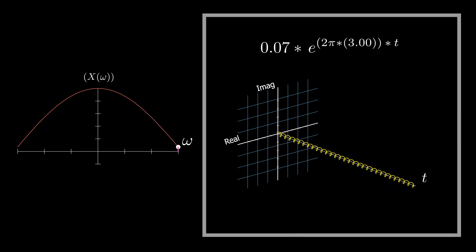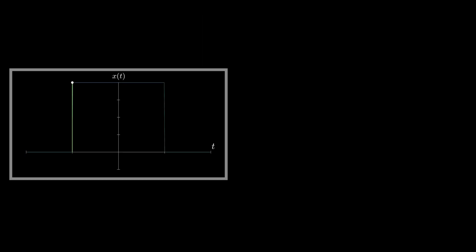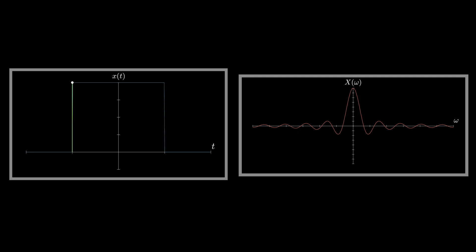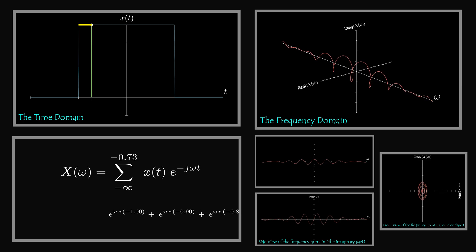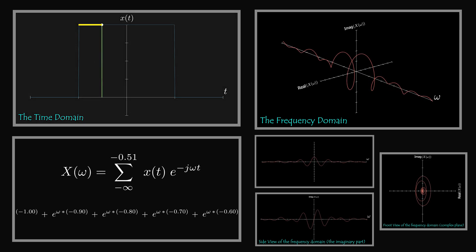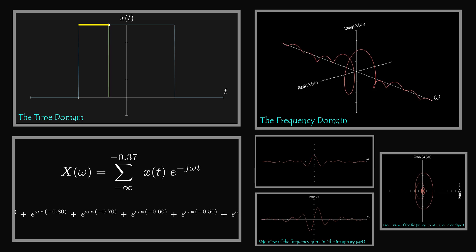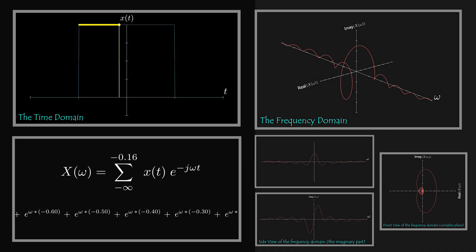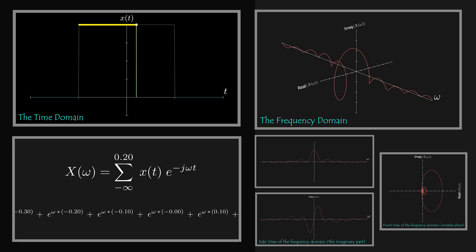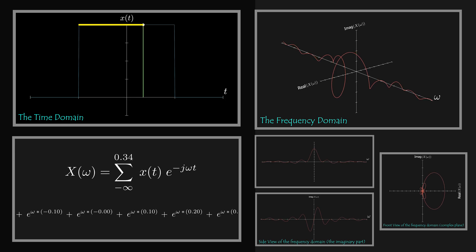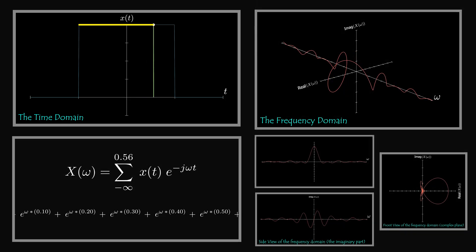So frequency and time domains are two sides of the same coin. Any time domain signal has its corresponding frequency domain that shows the strength of each frequency contained in the signal. Since each point in the time domain corresponds to a complex exponential in the frequency domain, and any time domain signal is nothing more than an infinite sum of all the points constructing the function, then the frequency domain representation of the signal is the infinite sum of all the complex exponentials corresponding to each point constructing the time domain signal. That's the idea of the Fourier transform.